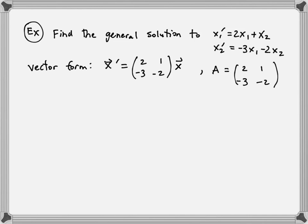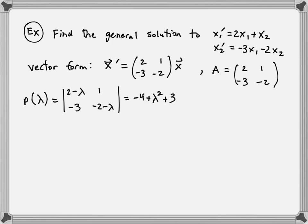Find the eigenvalues by computing the characteristic polynomial: det(A - λI) = det([[2-λ, 1],[-3, -2-λ]]) = (2-λ)(-2-λ) + 3 = λ² - 1. Setting this equal to zero gives λ = ±1. We have two eigenvalues, so the matrix is non-defective.